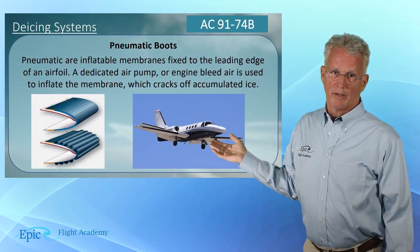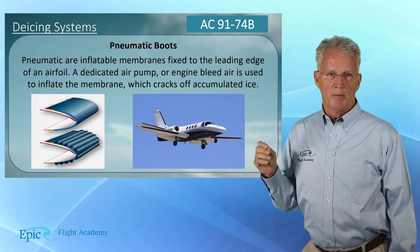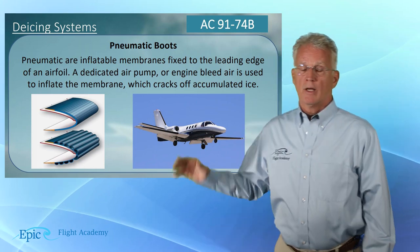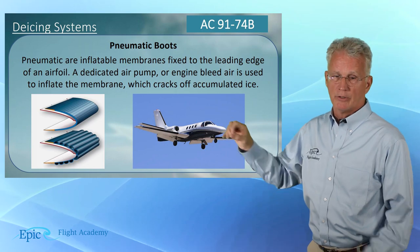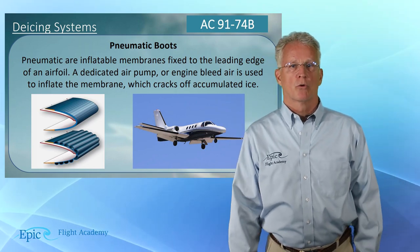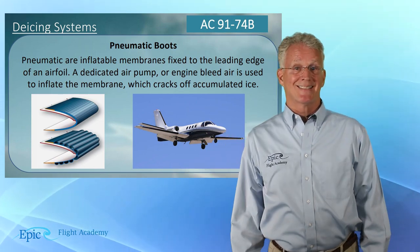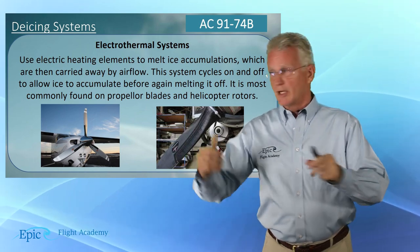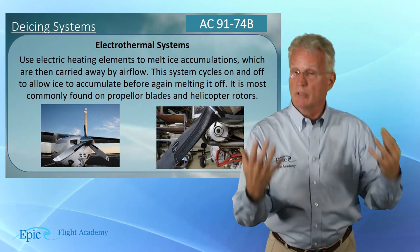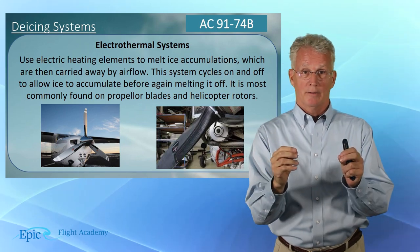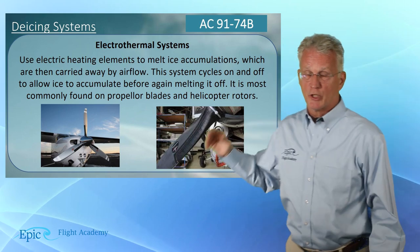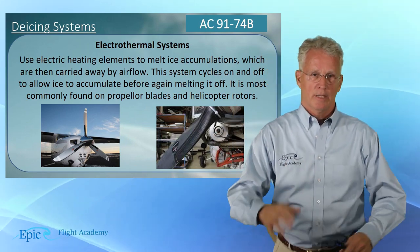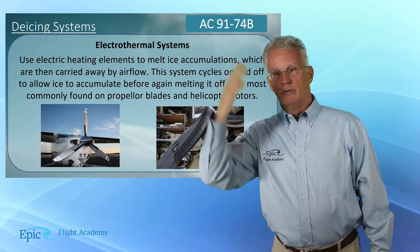De-icing systems remove existing ice. Pneumatic boots are common — these are inflatable membranes on the leading edge. A dedicated air pump or engine bleeder inflates the membrane, cracking off ice that has formed on it. The other common de-icing system is electrothermal — essentially a heating element. An electric heating pad is glued to the surface, such as the leading edge of the propeller. The system cycles on and off: the pad is heated, the ice is melted, and thrown off.